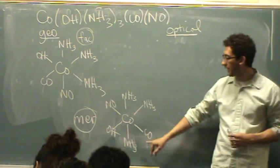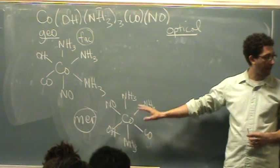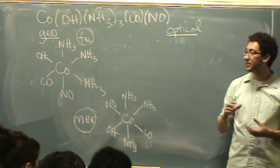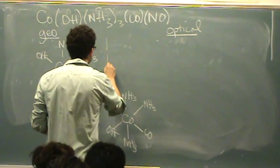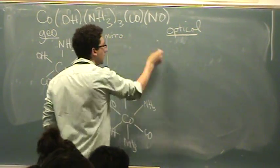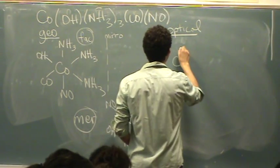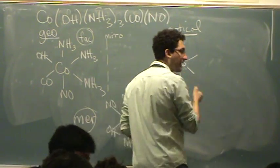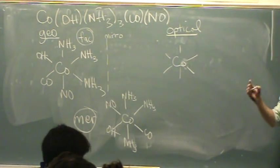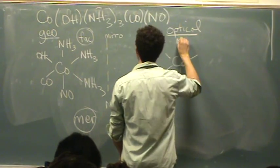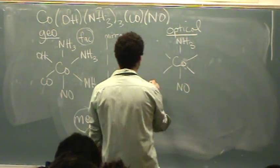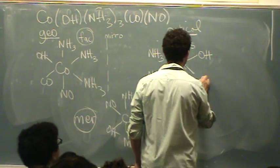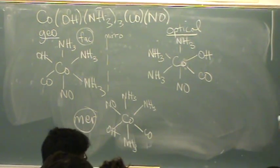However, the mer one in no case will have one, because mer, being like trans, is not going to have a non-superimposable mirror image. So what I'm going to do is draw my mirror here. In the optical category, I'm going to draw again a fac — so this will be fac also. It's a geometric isomer in that it's fac, however it's going to be the mirror image. NH3 on the top, NO on the bottom. Close to the mirror are NH3s, and far from the mirror are the OH on top and the CO on the bottom. There's the mirror image — again, this is fac.